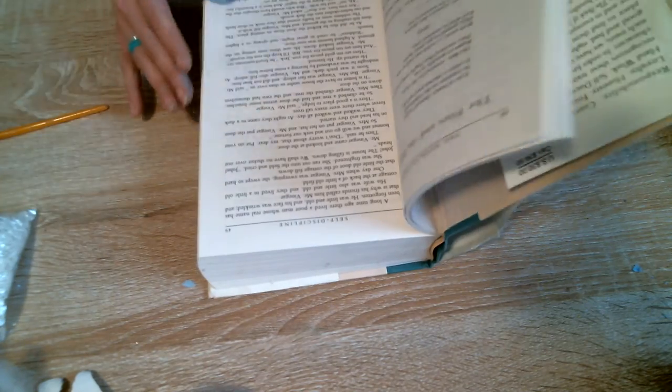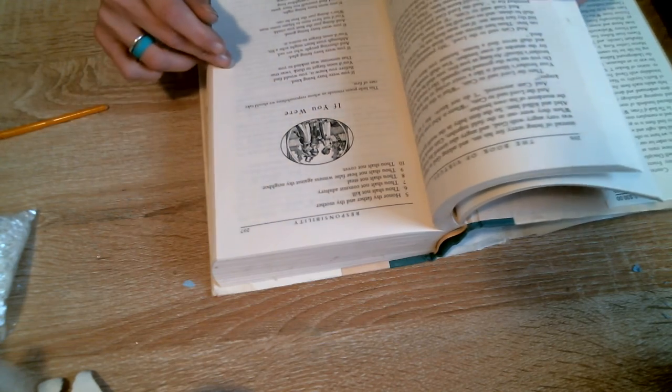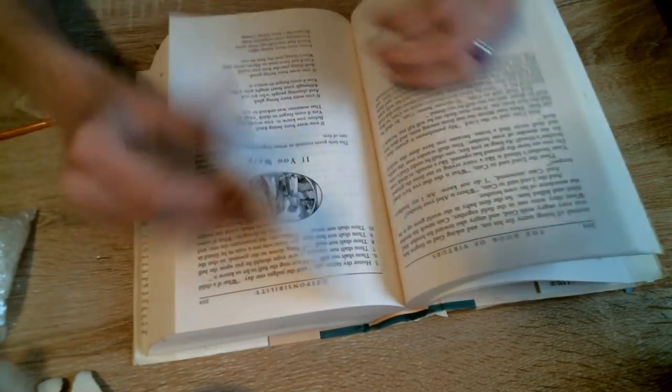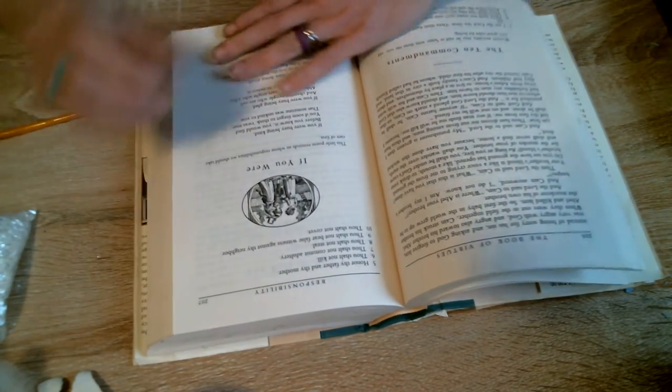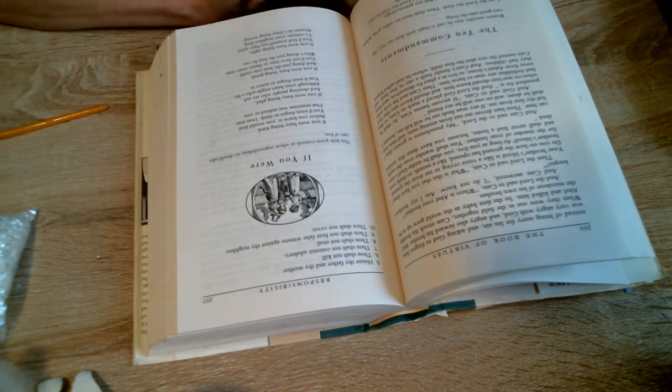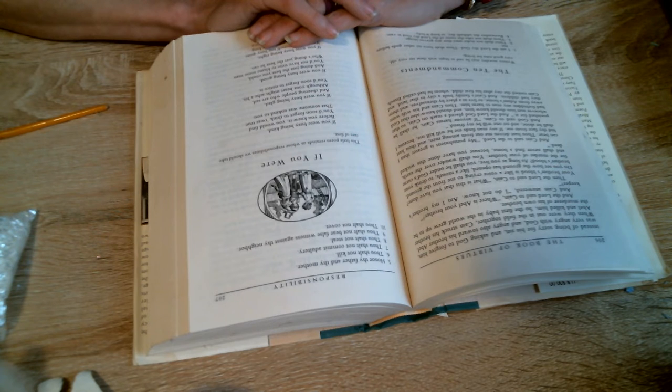Let's see... This is a spot from Responsibility. It is a poem called If You Were. This little poem reminds us whose responsibilities we should take care of first.